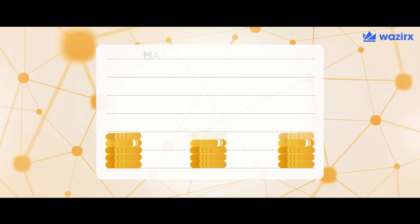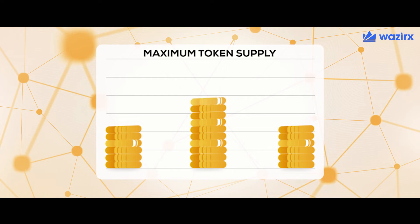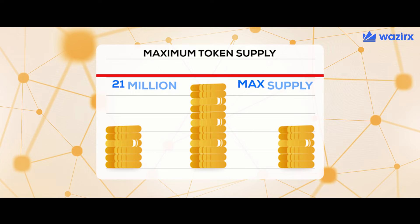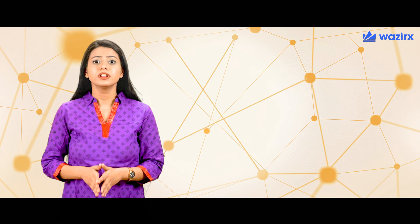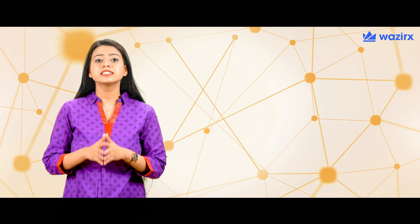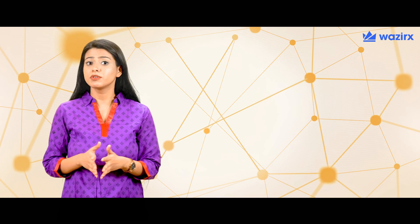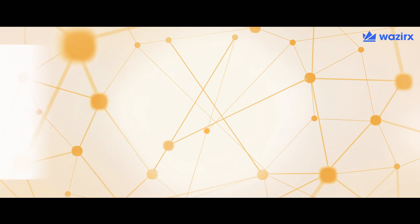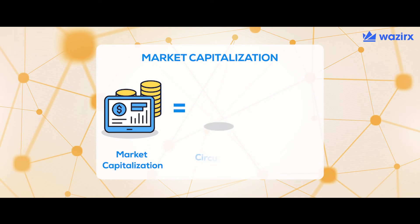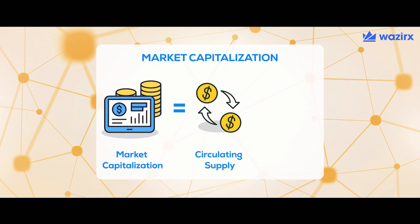Max supply quantifies the maximum amount of coins that will ever exist, including the coins that will be mined or made available in the future. Moreover, the circulating supply of a cryptocurrency can be used for calculating its market capitalization.